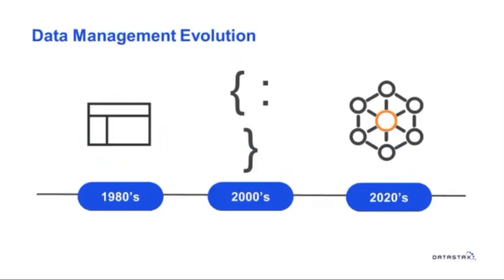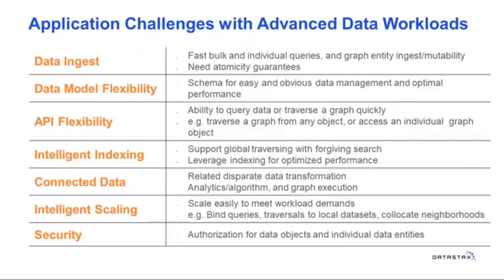The data management evolution is important to note — beginning with relational, moving to NoSQL, and then graph becoming more dominant as people look at the shapes of their data and try to match it with a platform. These challenges contribute to the mixed or advanced workload requirement. You need data model flexibility, API flexibility, and when talking about mixed workloads, you need to think about intelligent indexing, connected data, and more.